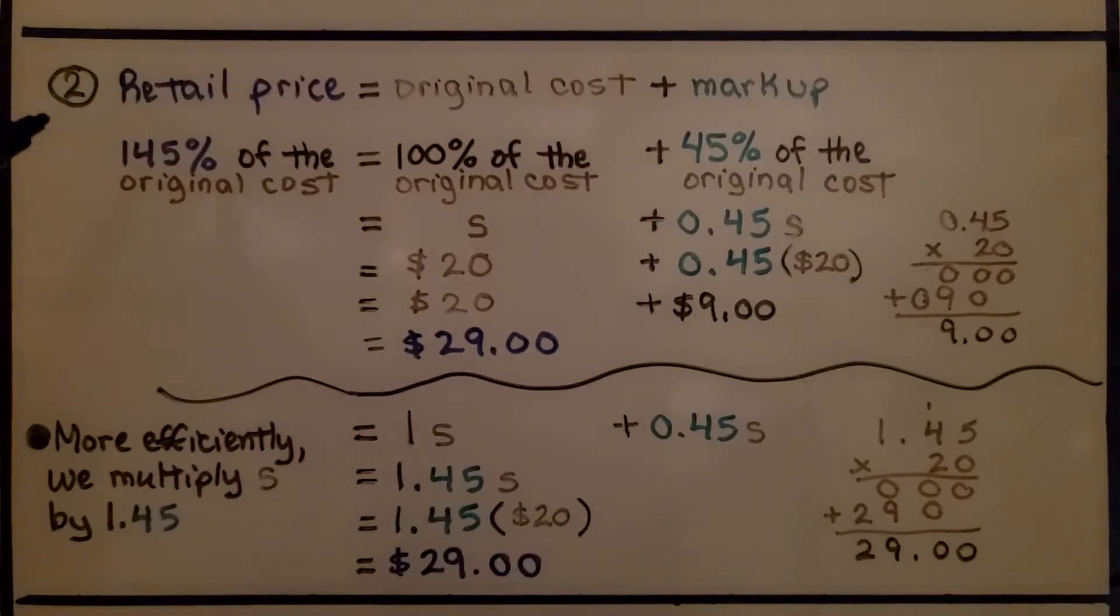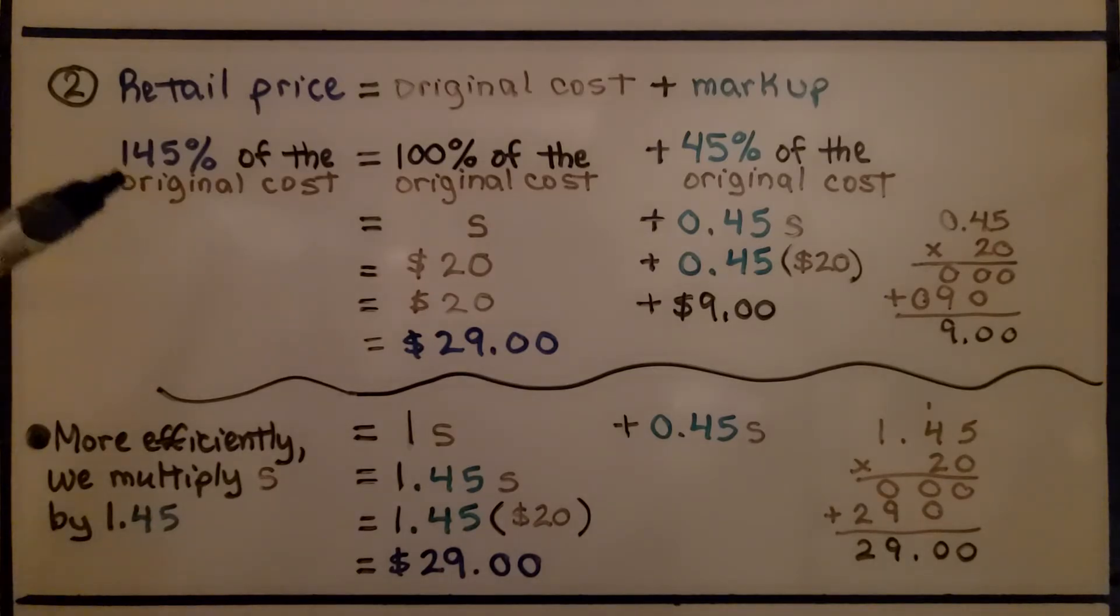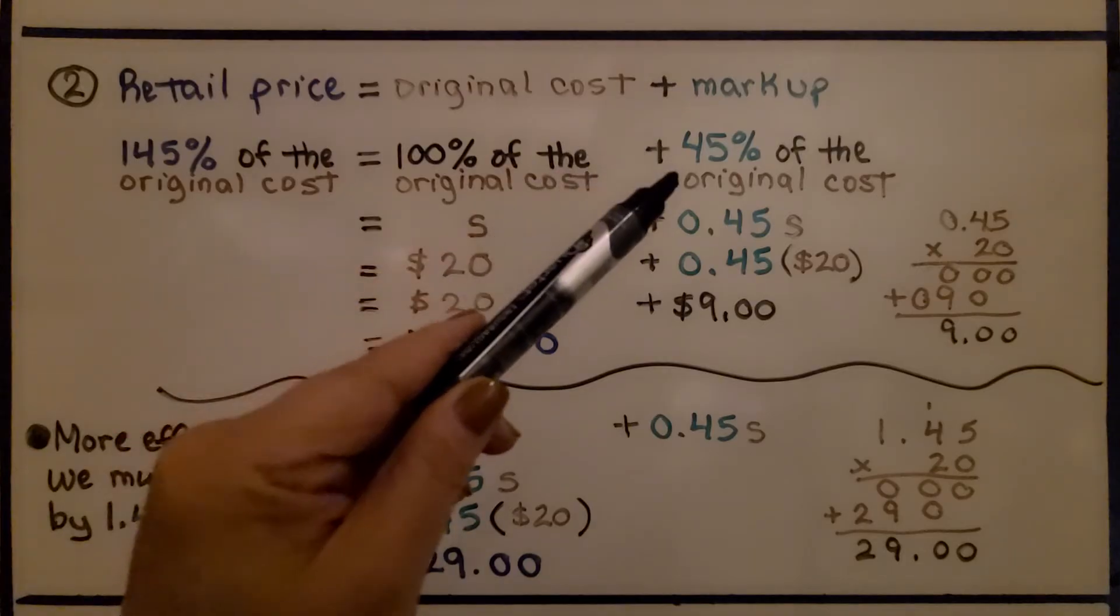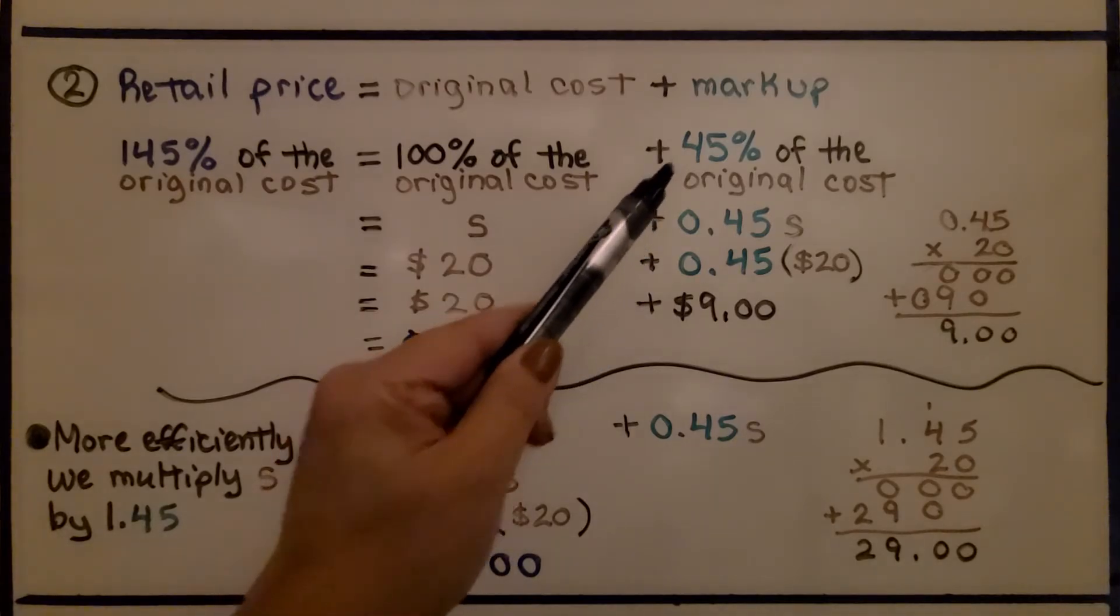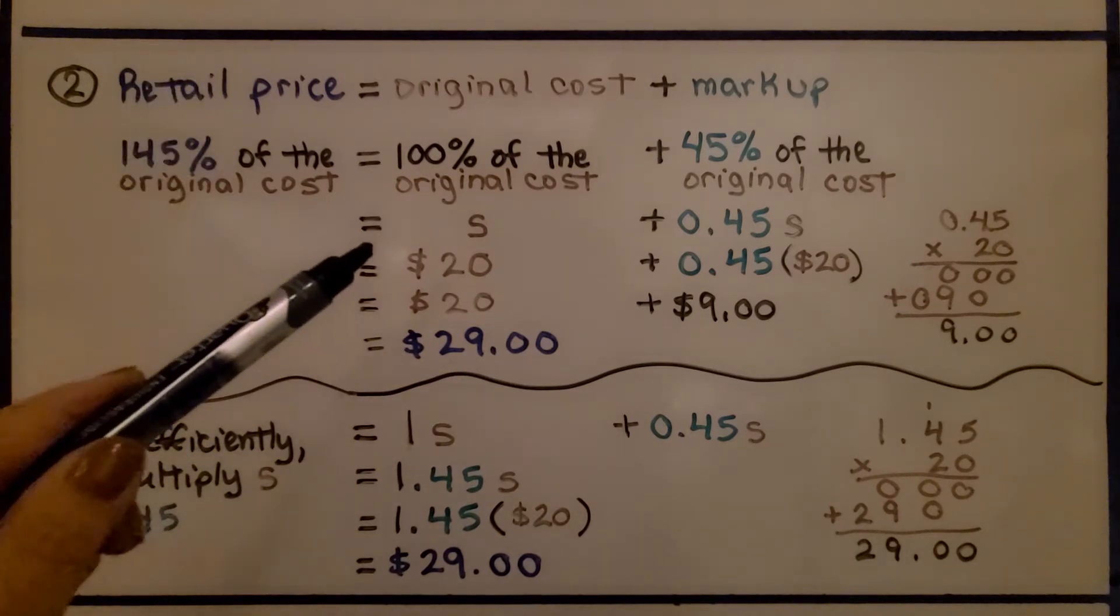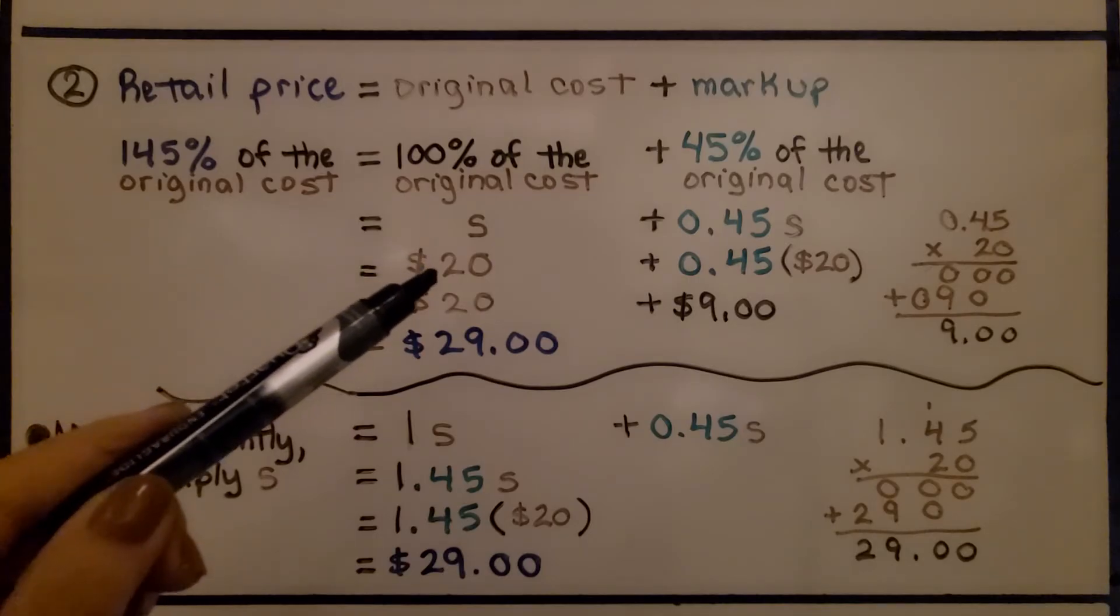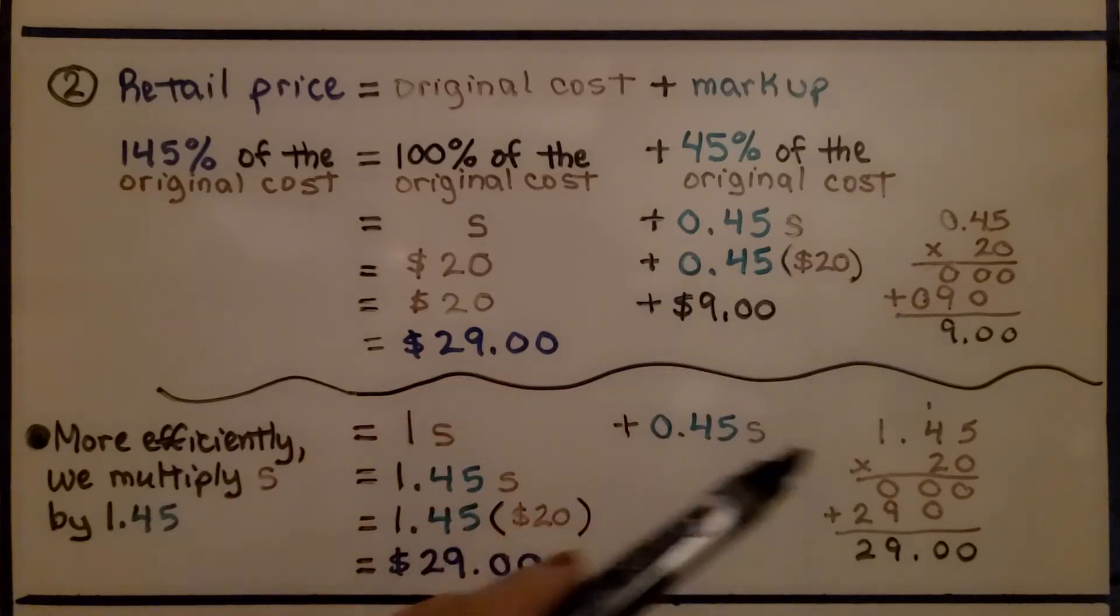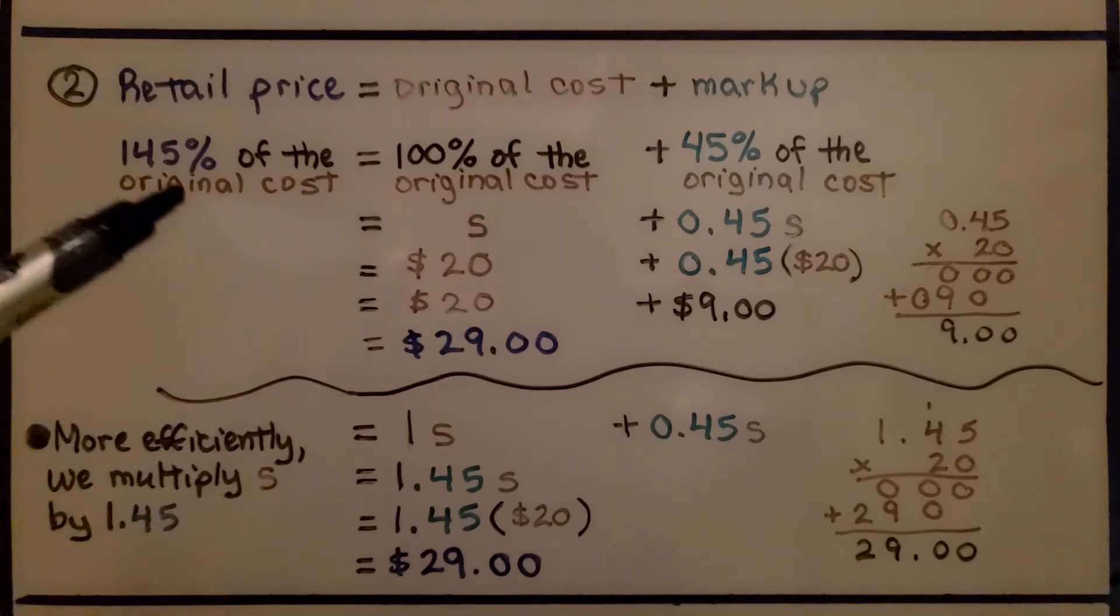The retail price is equal to the original cost plus the markup. That's 145% of the original cost as the retail price. The original cost is 100% and the markup is 45% of the original cost. The retail price equals S plus 0.45 times S. The original cost of $20 for that first shirt plus 0.45 times $20 comes out to $9. So we add the $20 plus the $9 to get $29 for the retail price. $29 is 145% of the original cost, $20.